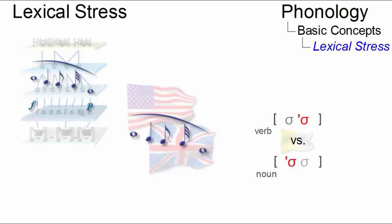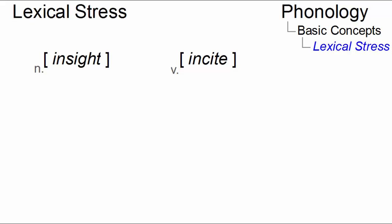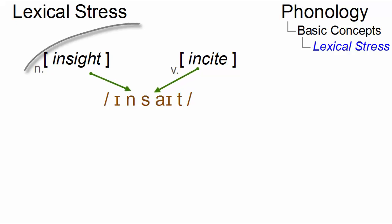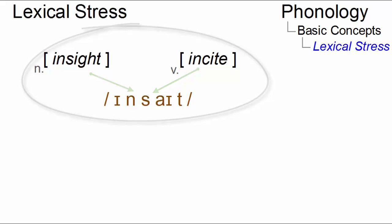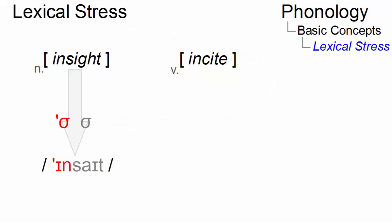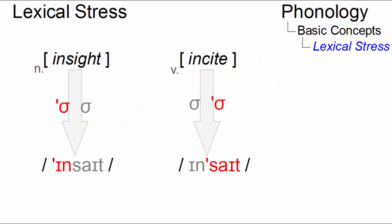Lexical stress is a supra-segmental phonological phenomenon of present-day English where the position of stress in polysyllabic words can serve to distinguish them. For example, the orthographically different words 'insight' and 'incite' are segmentally identical and are distinguished in pronunciation only by the fact that the stress is placed on the first syllable in 'insight' and on the second syllable in 'incite.'